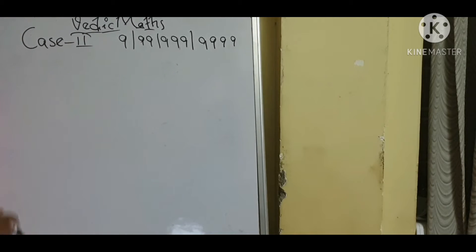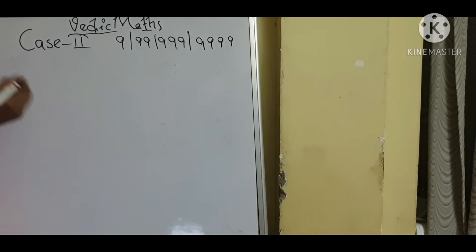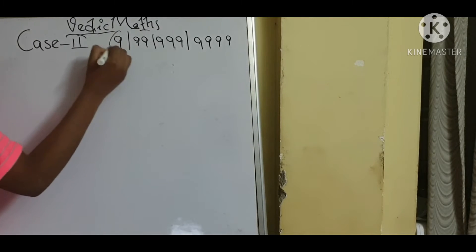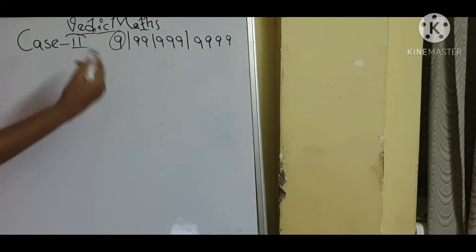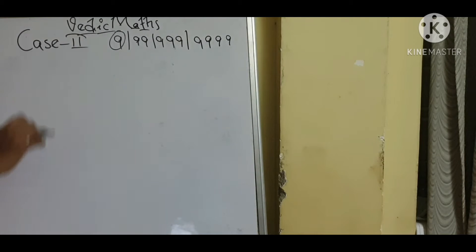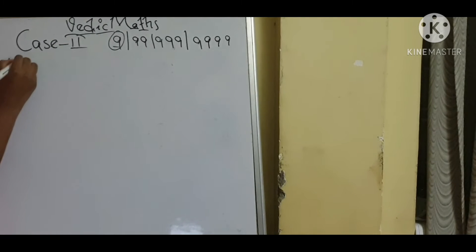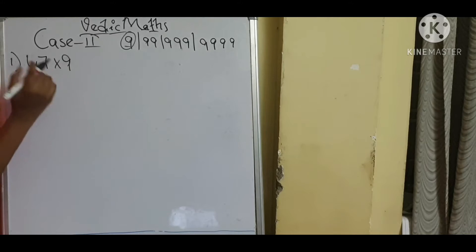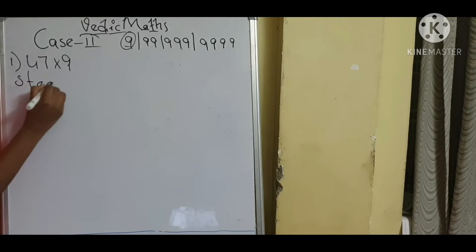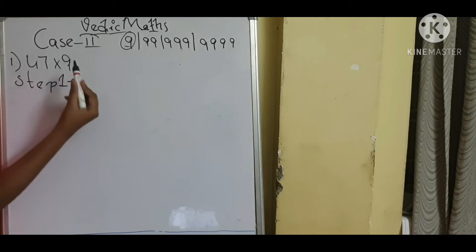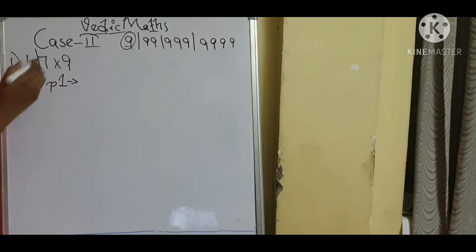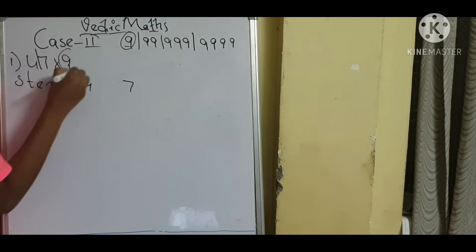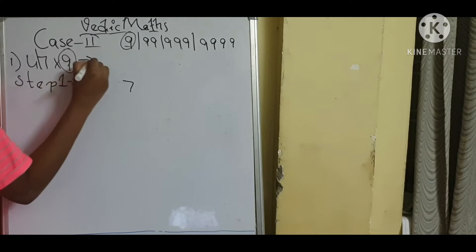In Case 2, we will learn multiplication using an easy method with these numbers only, just like yesterday we discussed with 9. We will discuss with 9 only. I will take the example of 47 × 9. Now we will start. Step 1: we have to keep a slash. This is a one-digit number, so we keep it after one digit: 4 and 7.